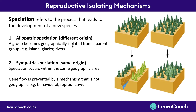The first was allopatric speciation — if you have a different origin, so you're physically in a different place. The second was sympatric speciation — if you're in the same origin but you still evolve differently. This video on reproductive isolating mechanisms is about understanding the reasons why a single species might evolve into different species.